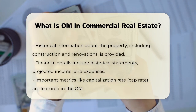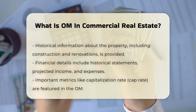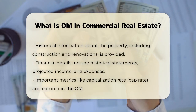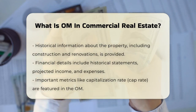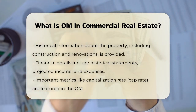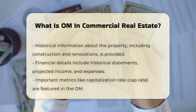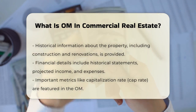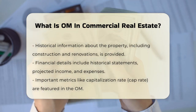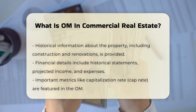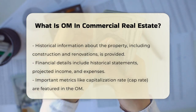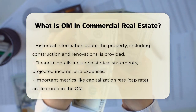The OM delves into the financials of the property, including historical financial statements, projected income and expenses, and important metrics like the capitalization rate or cap rate. It also provides a rent roll, which is a breakdown of the current tenants, their lease terms, rental rates, and occupancy rates.